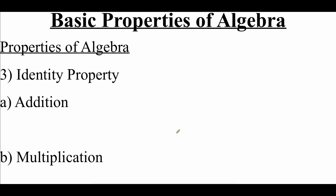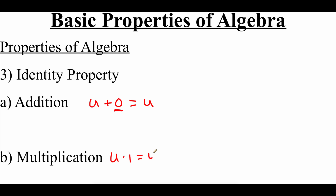The next property is the identity property, and there's an addition and a multiplication version. For addition, the additive identity is zero — because u plus zero still gives us u. For multiplication, the multiplicative identity is one — taking u times one results in u.